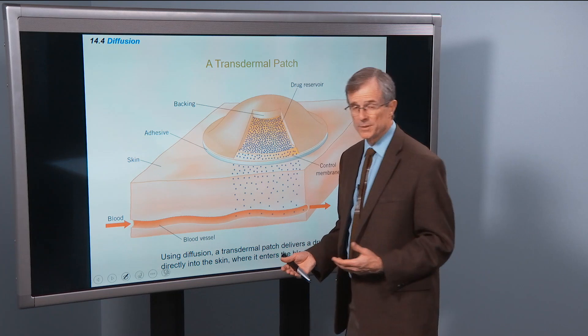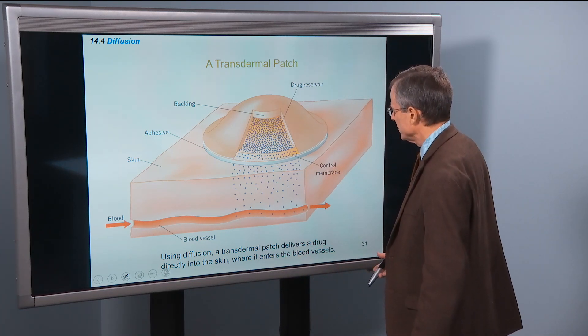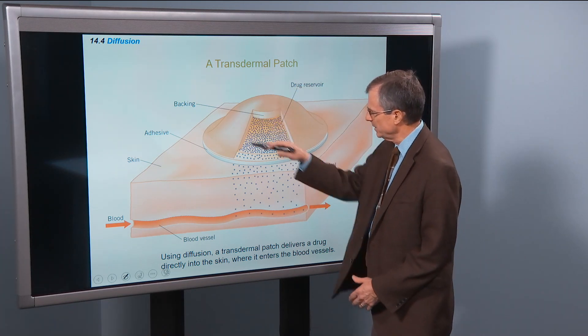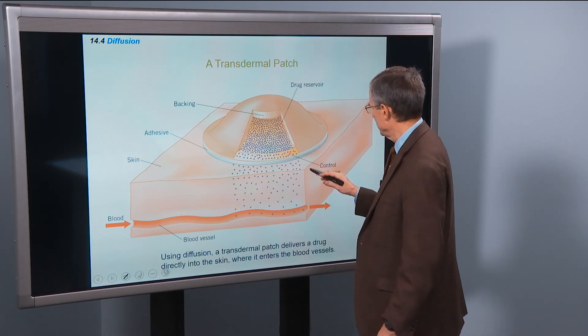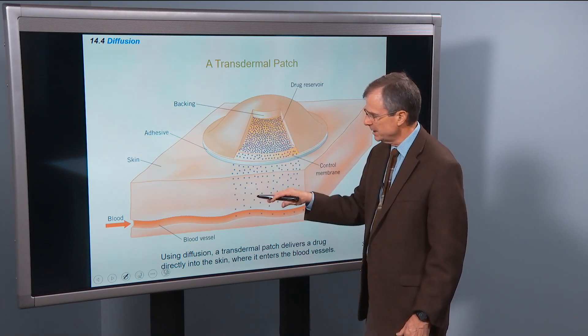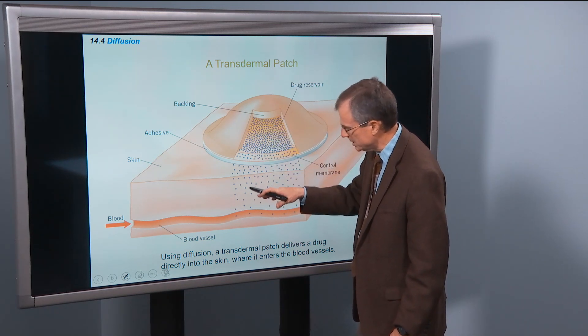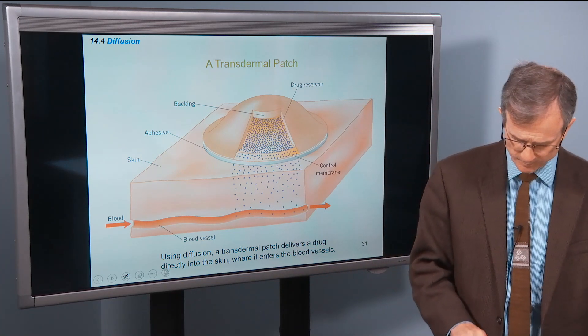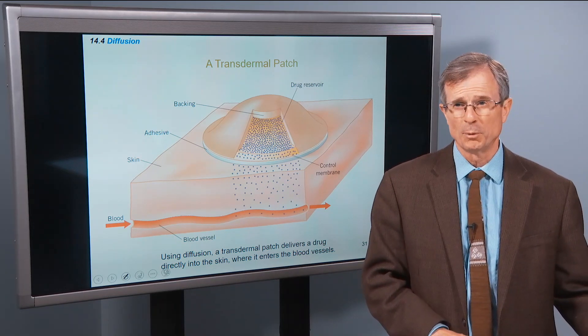So diffusion is very important in transdermal patches, for example. So you put that, it's a patch that you put on skin. There's a medication in this little sombrero-sized patch. There's a control membrane that controls the rate of flow of that drug into the skin, and then the skin absorbs the drug. It's diffusing into the skin, and eventually it enters the blood vessels. I think, I believe that nicotine patches are transdermal patches.